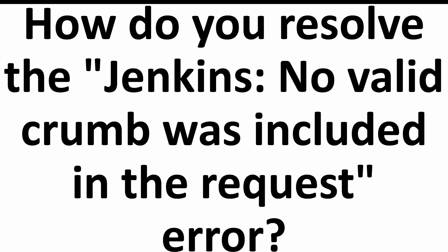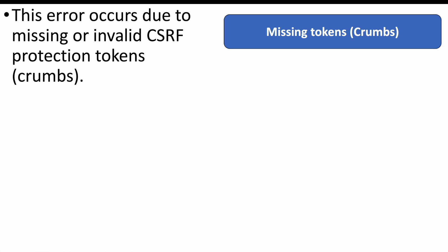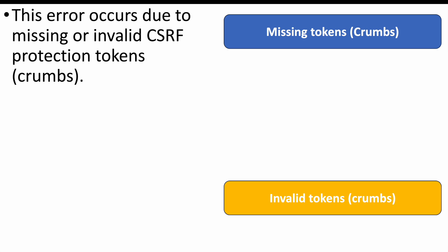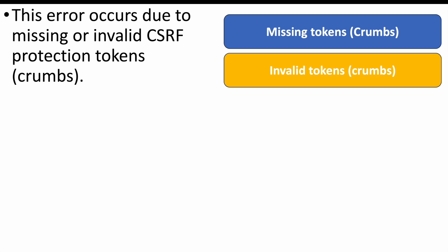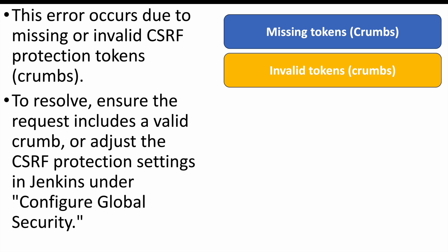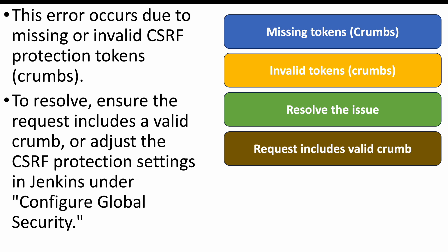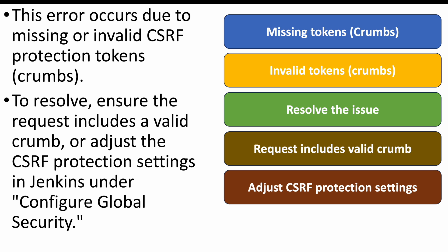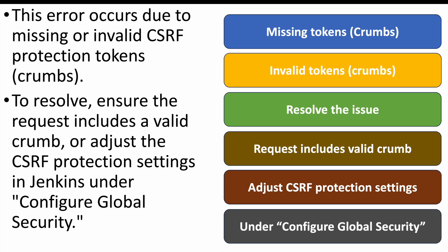The next question: how to resolve the 'Jenkins — no valid crumb was included in the request' error? This error occurs when CSRF protection tokens (crumbs) are missing or invalid — for example, if Jenkins was idle for a long time and the token expired. To resolve it, ensure the request includes a valid crumb, or adjust the CSRF protection settings under Configure Global Security and regenerate the request with a valid token.